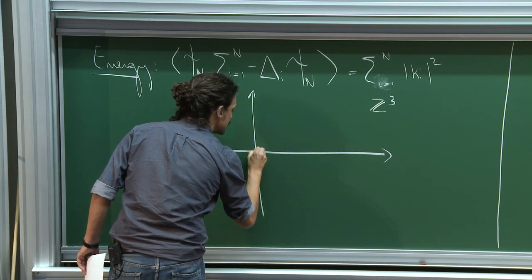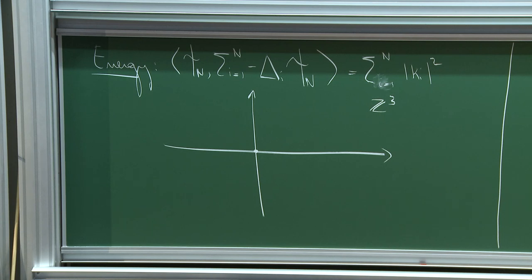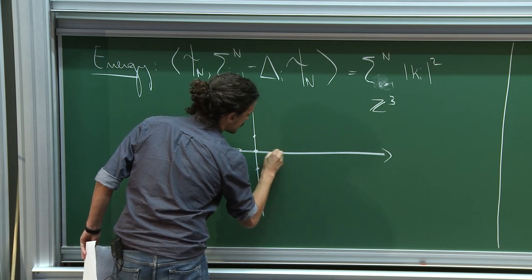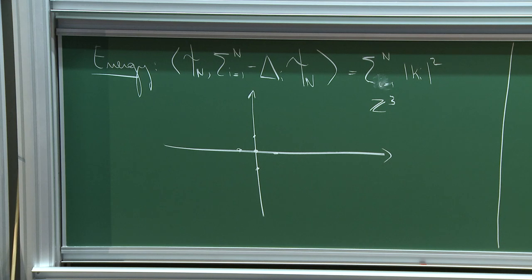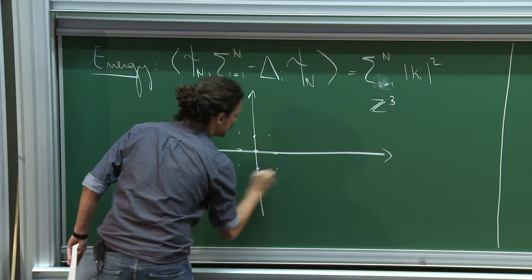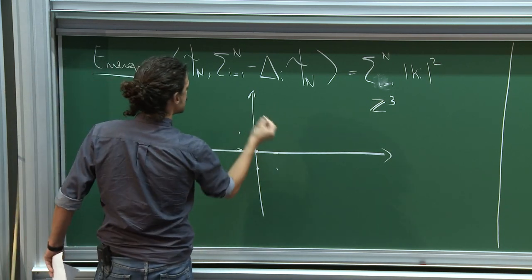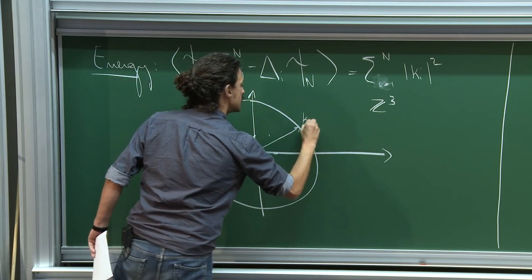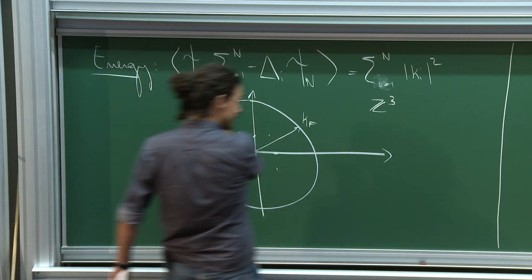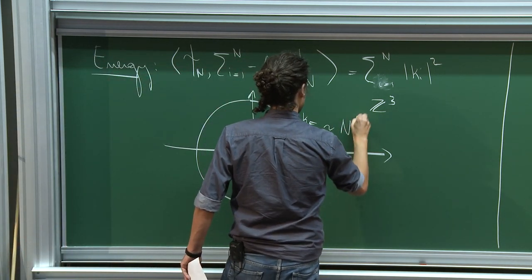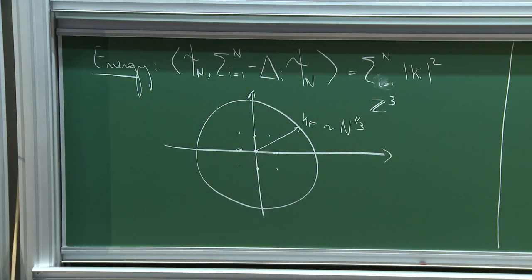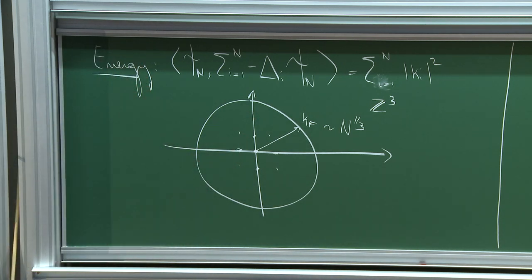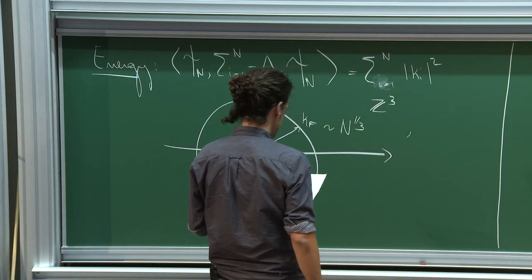You start to occupy states from k=0, populating states with the smallest norm first. This process fills a ball in Z^3, which has spherical symmetry. The resulting ball of radius k_F is called the Fermi radius or Fermi momentum, which grows as N^{1/3}. I will assume N is chosen so that the Fermi ball is completely filled.